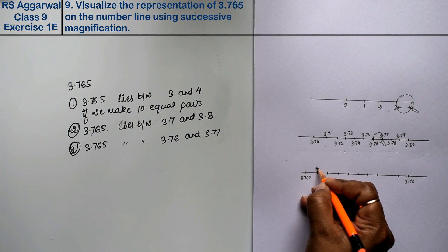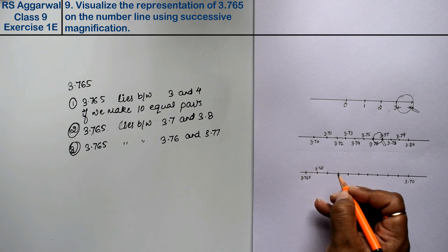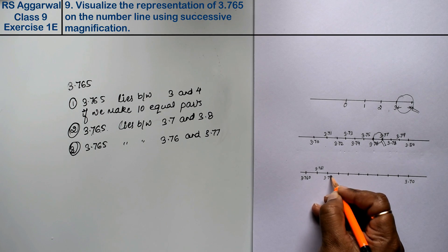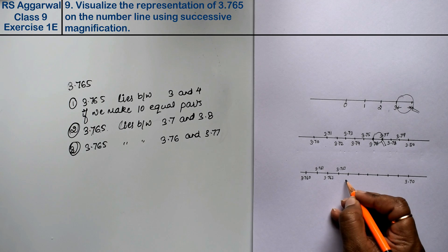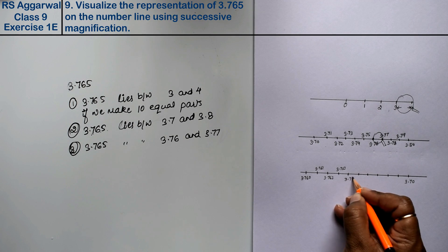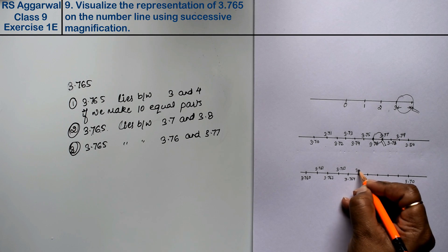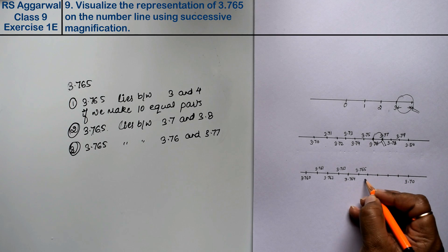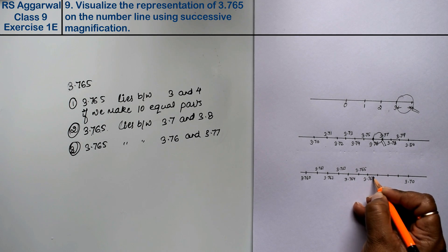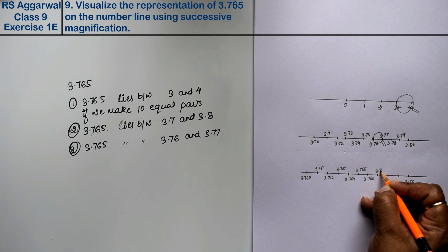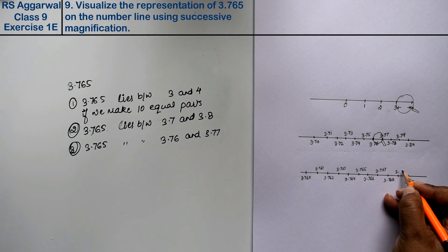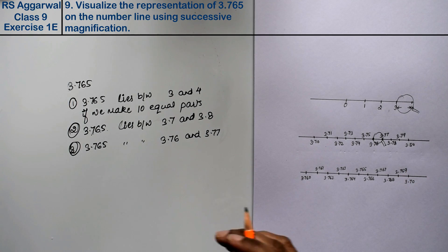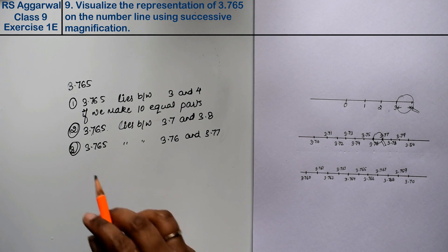So what is this? 3.761, 3.762, 3.763, 3.764, 3.765, 3.766, 3.767, 3.768, 3.769. Right friends? You see, this is 65, this is the point.